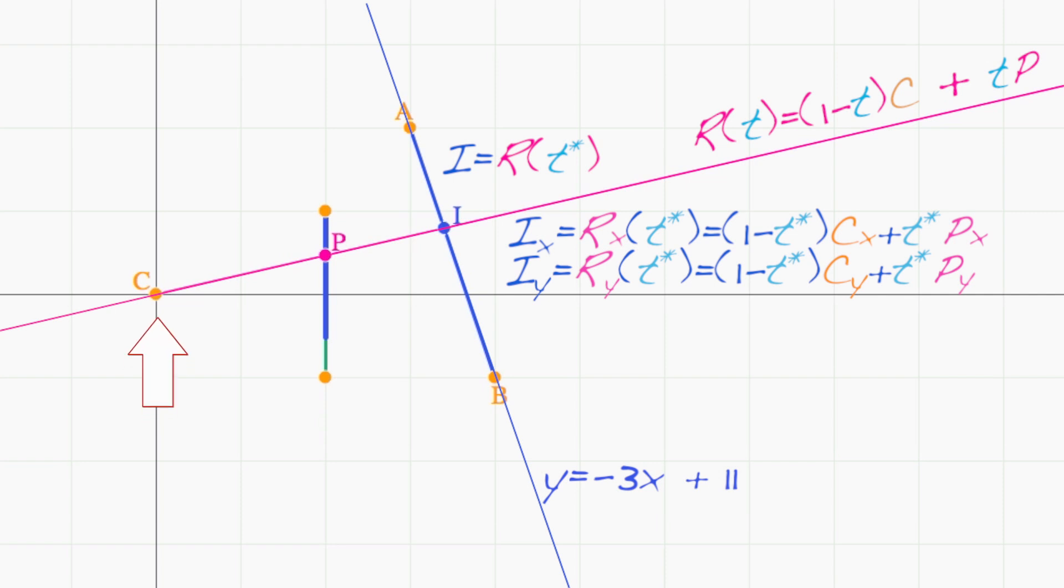In this particular case, c, our camera position, has coordinate 0, 0. And p has coordinates 2, 1 half. So we have i sub x equals t star times 2, and i sub y equals t star times 1 half.